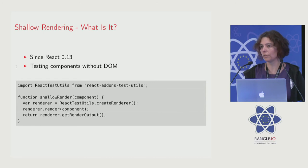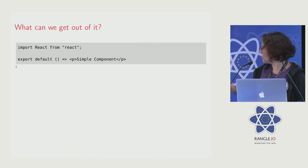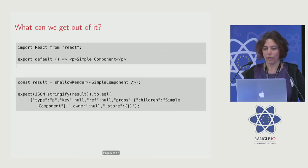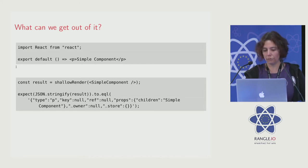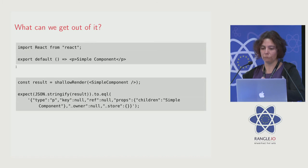So what is this output, and what can we do with it? If we look at a very simple component — and it doesn't matter whether it's a functional or a class-based component, it works with both — this is about the simplest component you can get. When you pass it to your shallow renderer and stringify the result, you get out this information. It contains the type, and you can look at the props and the children of what you returned.